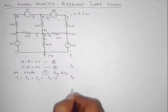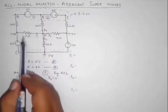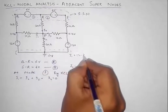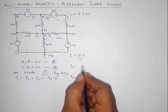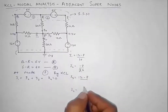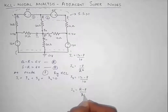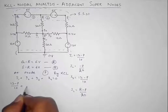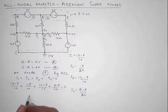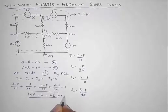Current always flows from higher to lower potential. Current I1 goes in this direction, so it is (12 minus P) over 10. I2 is (20 minus P) over 10. I3 is R minus P over 20. Placing these into the KCL equation and solving — taking LCM and cross-multiplying — gives us equation C: 6P minus R equals 48.